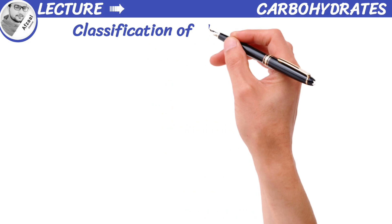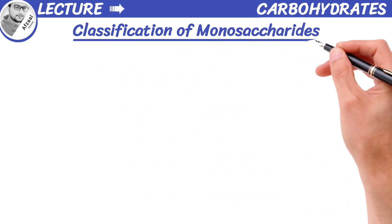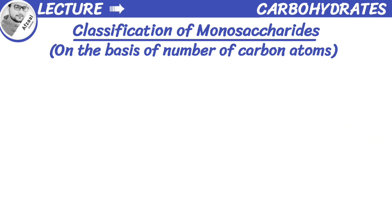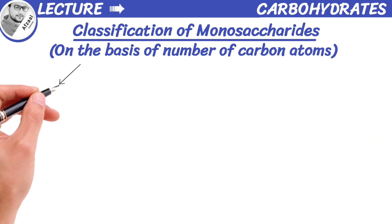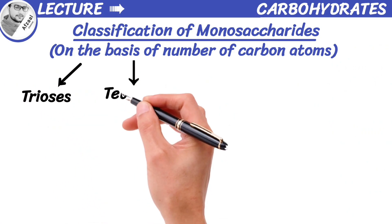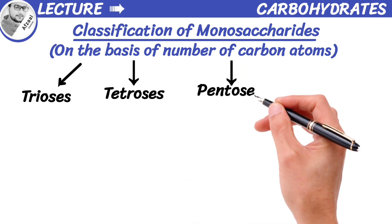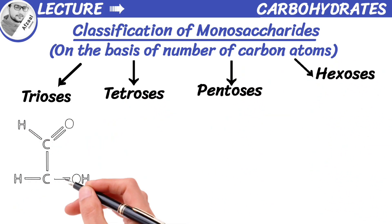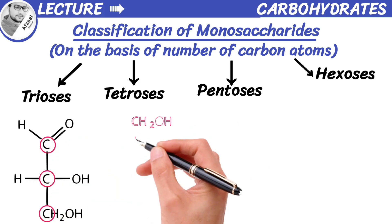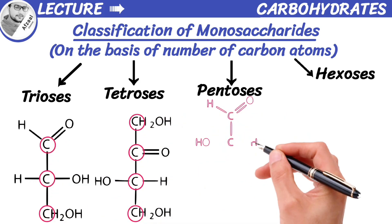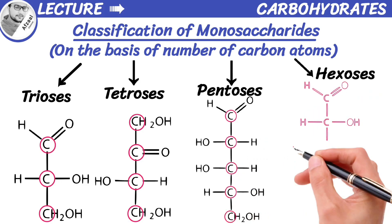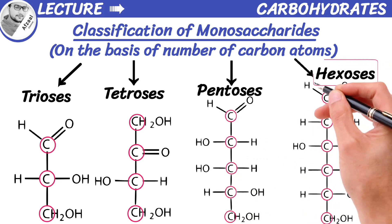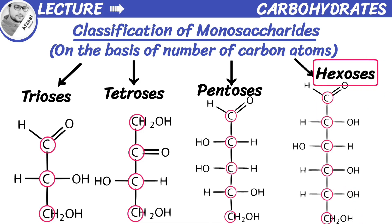Monosaccharides can be further classified on the basis of number of carbon atoms. They consist of 3 to 9 carbon atoms, and are therefore classified as trioses, tetroses, pentoses, hexoses, and so on. Trioses contain 3 carbon atoms, tetroses contain 4, pentoses contain 5, and hexoses contain 6 carbon atoms in their chain. The important monosaccharides are hexoses like glucose and fructose.